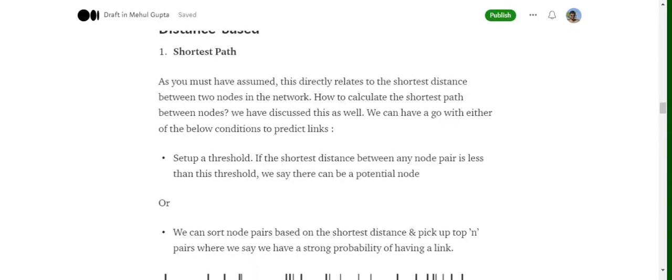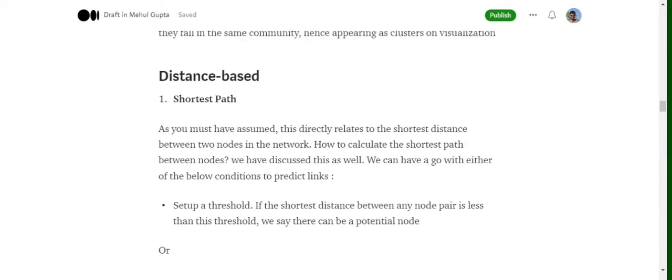Moving on to the next criteria, that is distance-based. Now in distance-based we have multiple variations. The first one is the shortest distance. In terms of shortest distance we can have two variants. One is we pick up between all the nodes U and V where we don't have an edge in the particular graph, we calculate the shortest distance and pick up the top N node pairs where the shortest distance is the lowest.